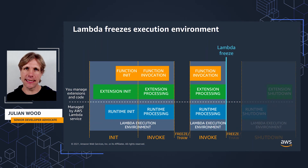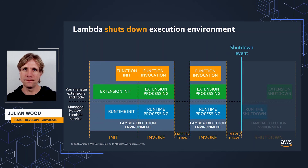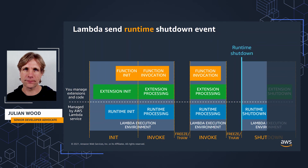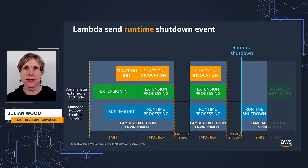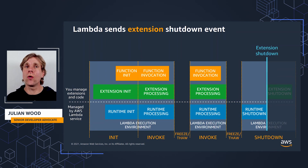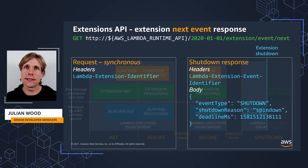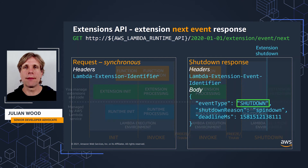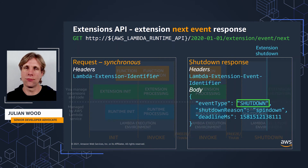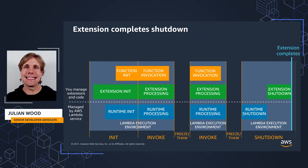If there are no pending invokes, Lambda freezes the execution environment, including the runtime and all extensions. The shutdown phase is triggered if the Lambda function does not receive any invocations for a period of time, or Lambda needs to refresh the environment. Lambda sends the runtime a shutdown event rather than an invoke request in response to the previous next API call. If there are only internal extensions, the runtime has 500 milliseconds to gracefully shut down or it's terminated. At the same time, Lambda sends a shutdown event to all registered external extensions in response to the previous extensions API next request. The entire shutdown phase is capped at 2 seconds if there are external extensions. If any external extensions haven't shut down by then, they are terminated.